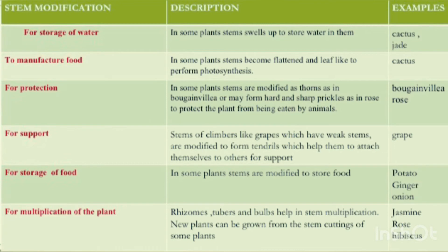Next modification: For storage of food. In some plants, stems are modified to store food. Examples: Potato, Ginger, Onion.